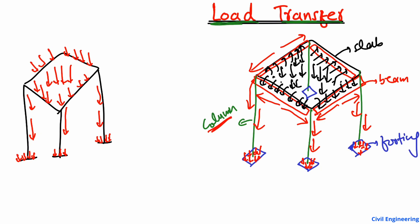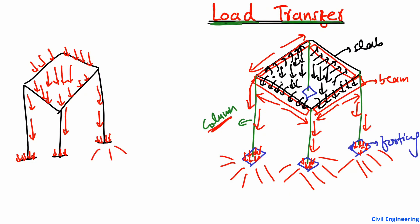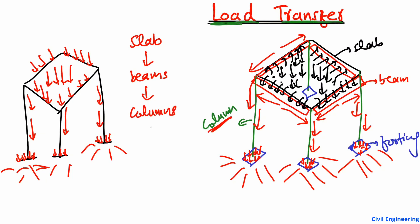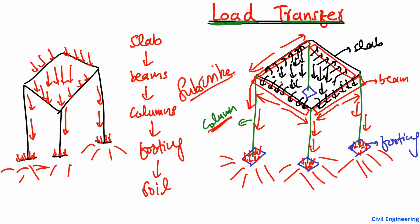After this, the load is distributed into the soil. The soil takes the load depending on its bearing capacity. So this is the main explanation for load transfer: the slab is the main part where load comes, then it transfers to the beam, then to the columns, then to the footing, and then distributes into the soil. This is the general mechanism for load transfer from slab to footing. Hope you guys understand — don't forget to subscribe to our channel. Thank you for watching.